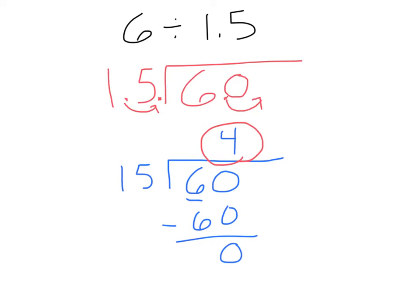Your basic strategy is always to write this outside number without a decimal, move it over as many places as needed, then move over the inside decimal the same amount, and then divide like normal.